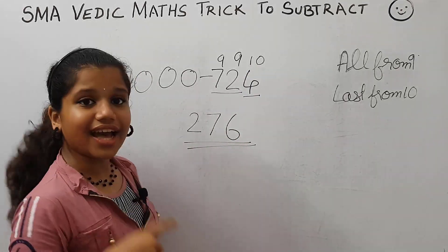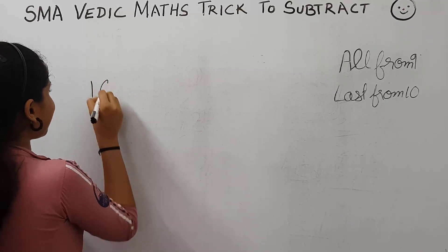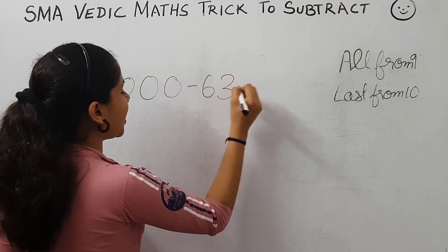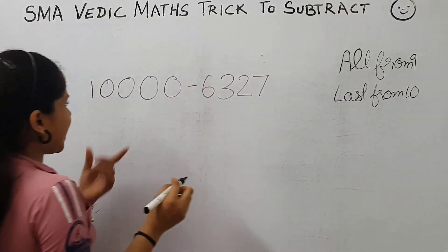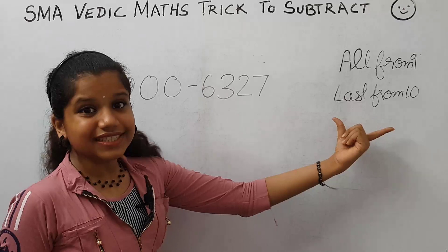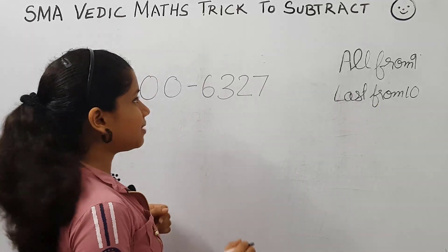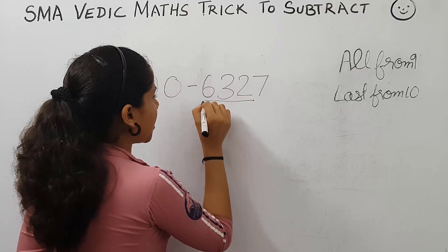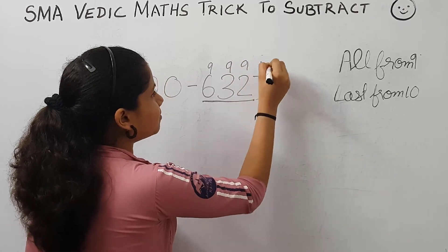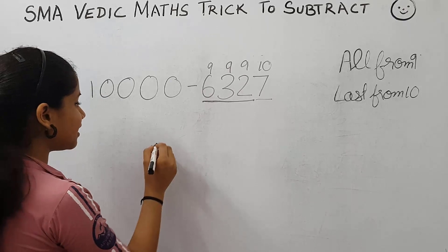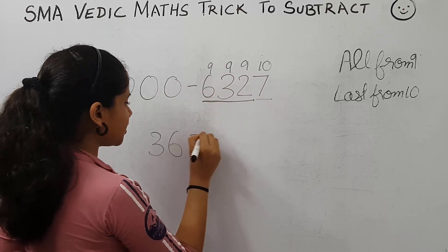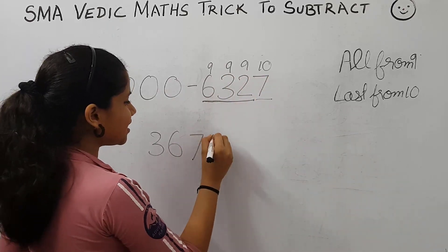Now let's take another question: 10,000 minus 6,327. Here there are four zeros and four digits, so we can apply the rule all from 9 and last from 10. These digits are subtracted from 9 and the last digit from 10. 9 minus 6 is 3, 9 minus 3 is 6, 9 minus 2 is 7, 10 minus 7 is 3. The answer is 3,673.